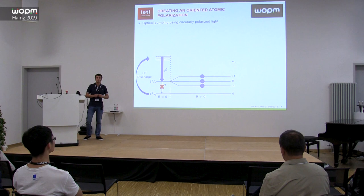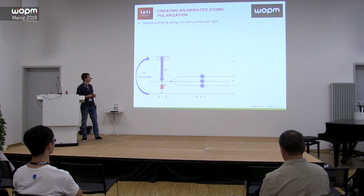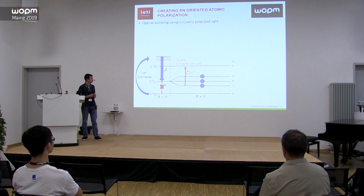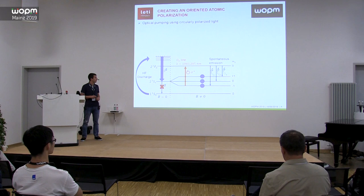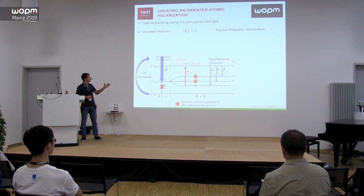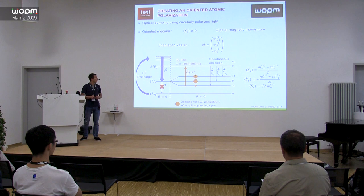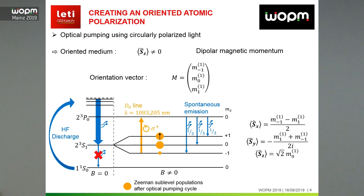Now we can perform optical pumping to create an appropriate atomic polarization in the medium. We can do orientation with circularly polarized light, which will pump the atoms from the M=-1 Zeeman sub-level toward the 2-3-P0 upper level. At the end of the pumping cycle, we obtain an oriented medium with non-zero mean magnetization, which can be described by an orientation vector. On the right of the screen you can see the different mean values of the spin operators in terms of the components of the orientation vector.